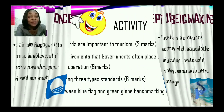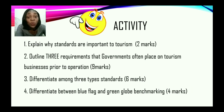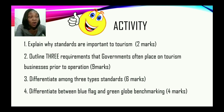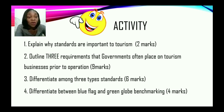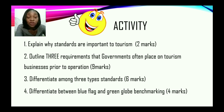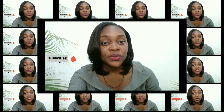Now that we're at the end of today's session, you should be able to answer these questions: one, explain why standards are important to tourism; two, outline three requirements that governments often place on tourism businesses prior to operation; three, differentiate among three types of tourism standards; and four, differentiate between Blue Flag and Green Globe benchmarking. You have made it to the end of the video — don't forget to hit that subscribe button, share with persons who will find this information useful, and turn that thumbs up icon blue. Thank you for watching Ferris Tutorials.